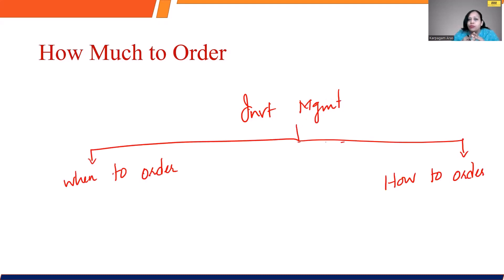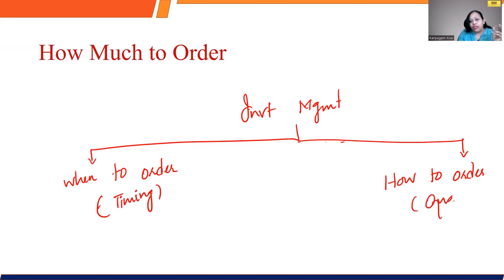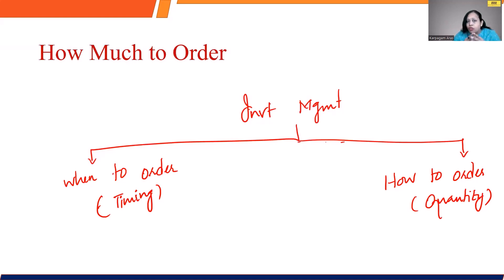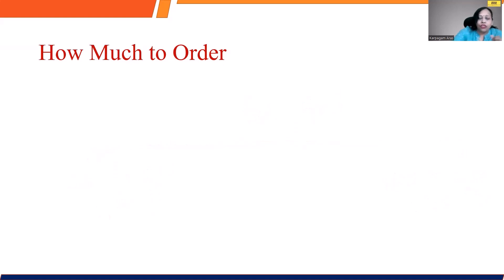In inventory management, you have to answer two questions: how much to order and when to order. 'When to order' talks about the timing decisions, and 'how much to order' talks about the quantity decision. These are the two premises of inventory management. If you know exactly what you are looking for, you can choose the model accordingly. In terms of how much to order, we always talk about the quantity decisions.